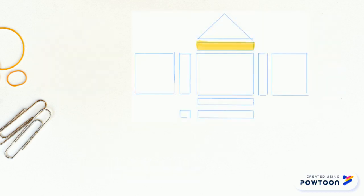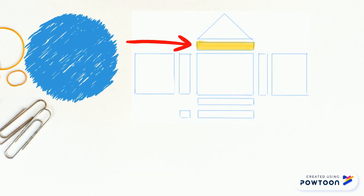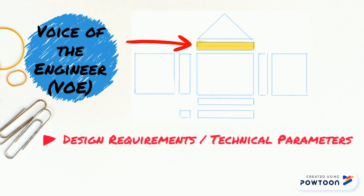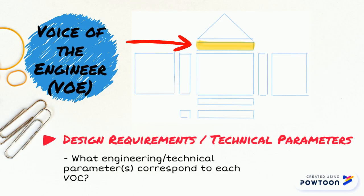Next, the voice of the engineer, or VOE, room. Here we ask, how do we translate customer requirements to engineering or technical parameters? These parameters have to be measurable, else it will be difficult to set targets for each of them and determine the extent to which they are achieved.